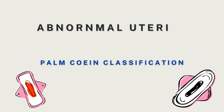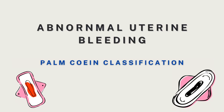Hello everyone. We are back with our discussion on abnormal uterine bleeding, primarily its causes and the PALM-COEIN classification. We have already discussed about polyps, adenomyosis, leiomyoma (uterine fibroids), and started with the discussion on one of the commonly encountered gynecological cancers — endometrial cancer.